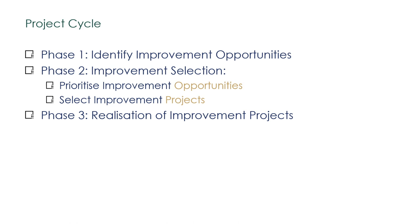There are three phases in the life cycle of a project. Phase one is the identification of an improvement opportunity. Phase two is the prioritization of improvement opportunities and the selection of improvement projects. And phase three is the realization of the project.